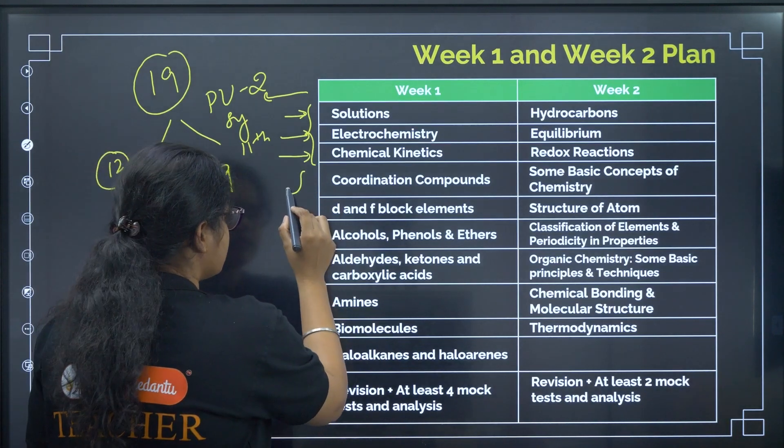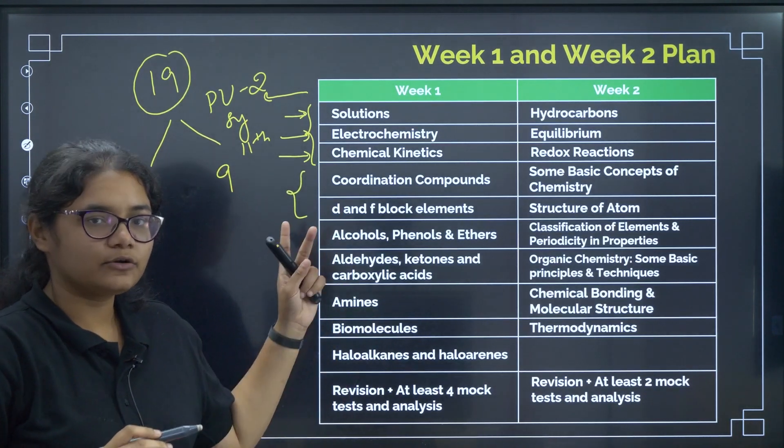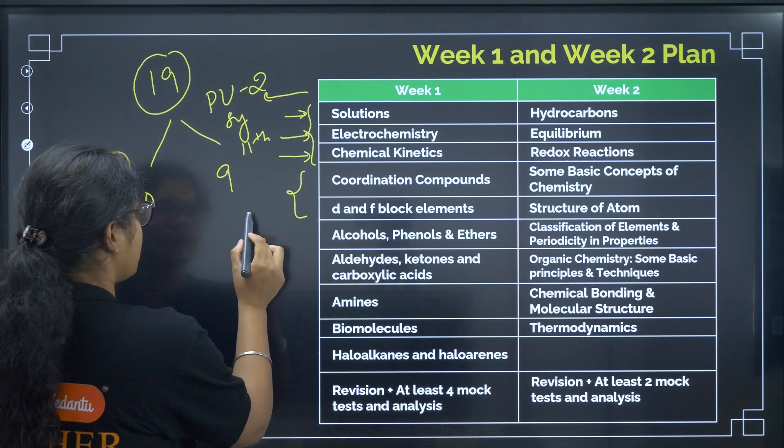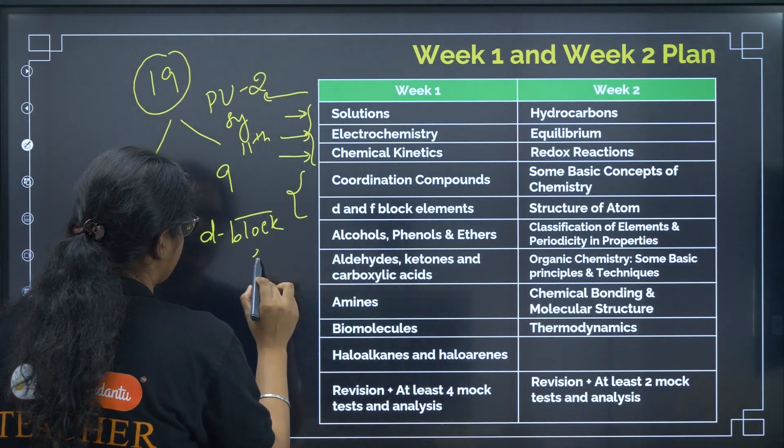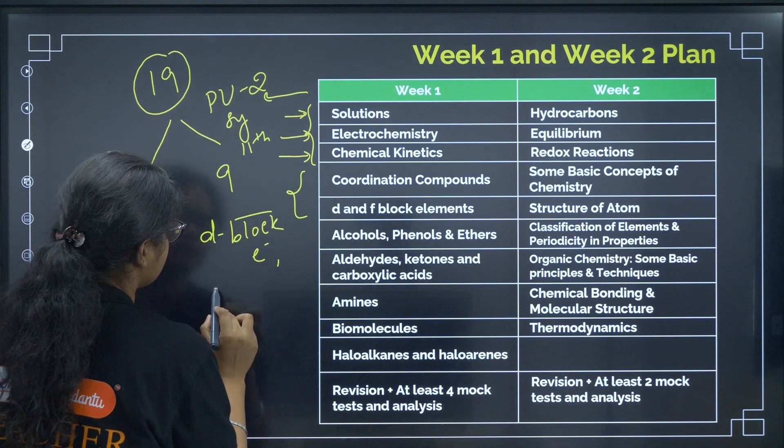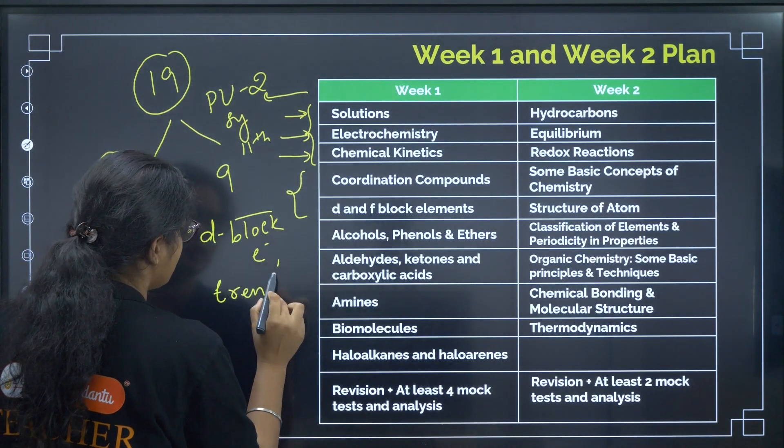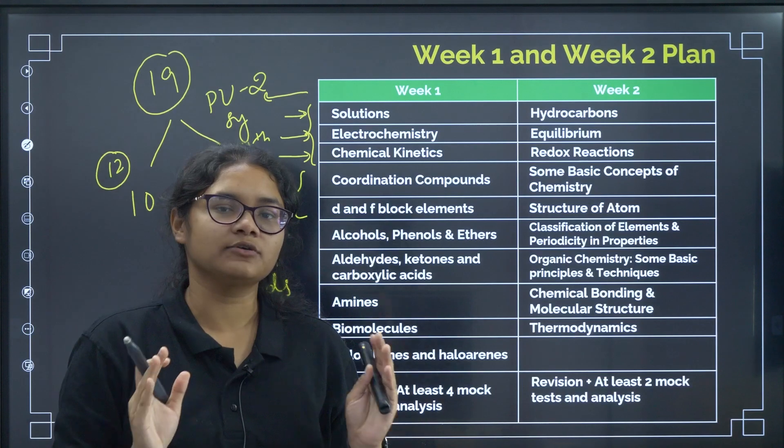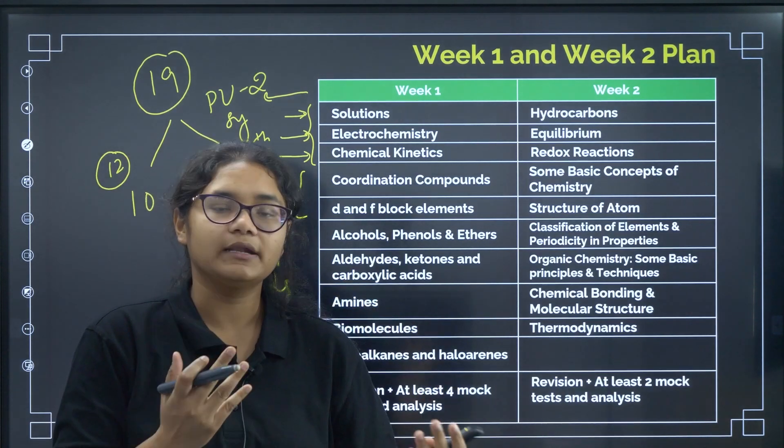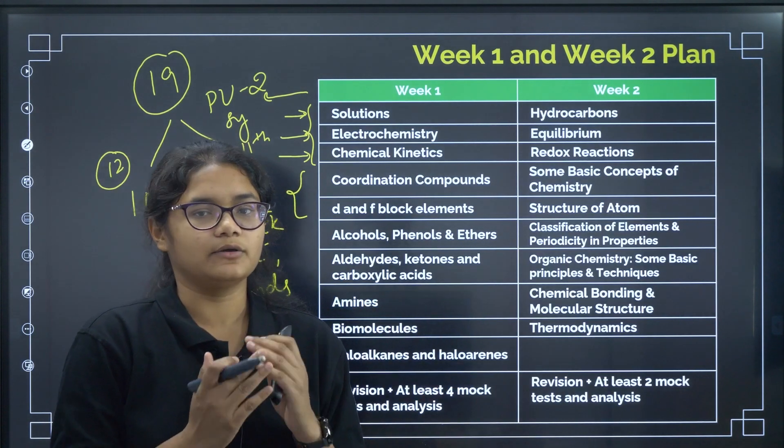Next, coming to coordination compounds and D&F block. These are the two chapters from inorganic chemistry. Here you can prepare the D block configuration, electronic configuration, then we have transition D block. Just revise everything, go slow, revise all the formulas, magnetic moment formula, CFSE theory.